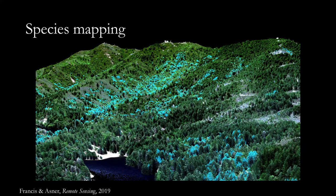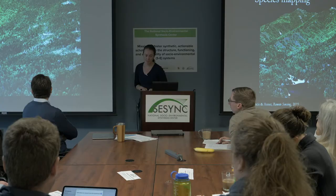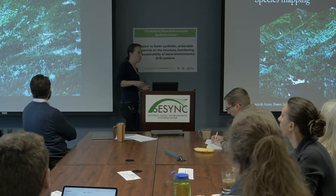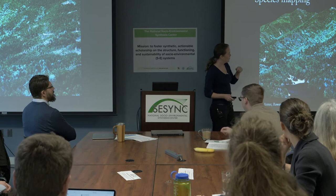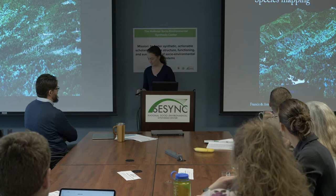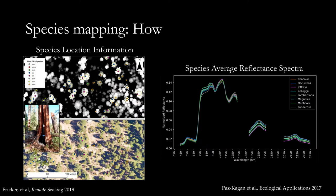To get started I'll talk about species mapping. This is a map from work done by Emily Francis, a grad student at Stanford, who did a bunch of work looking at mapping redwood distributions in Marin. What you see here in blue are the locations of redwood trees across this landscape. There are a lot of different reasons people are interested in the particular location of a given species across landscapes, and how you would start to develop these maps is by collecting sufficient ground data so that you can build models using spectral data.